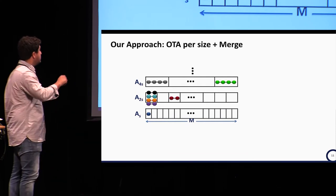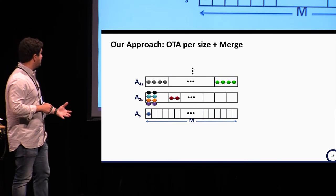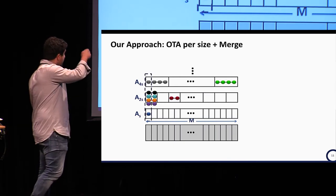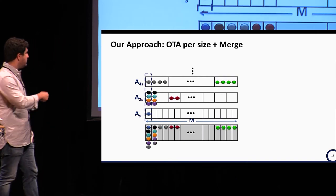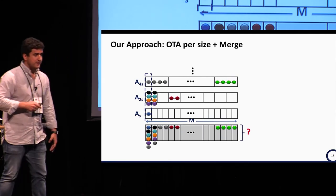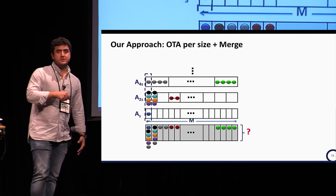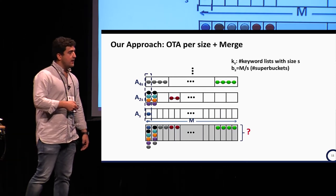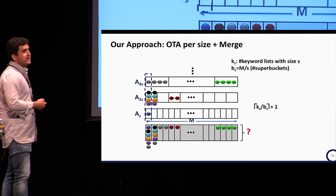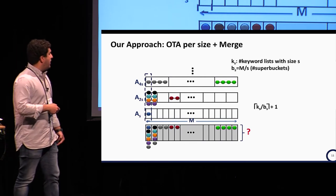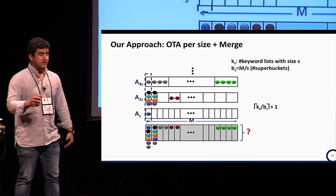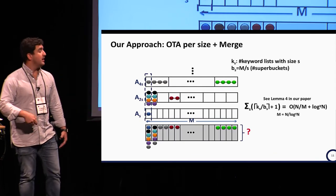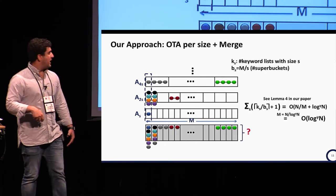After running offline two-choice allocation per size, we perform the merging by storing each column into its corresponding super-bucket in the merged gray array. The maximum super-bucket size determines the read efficiency. Defining k_s as the number of keyword lists of size s and b_s as the number of super-buckets for size s, the analysis of offline two-choice allocation gives a maximum load per bucket of k_s over b_s plus 1. Taking the summation and carefully setting m to n over log to the power of gamma of n, we prove that each bucket has capacity at most log to the power of gamma of n.